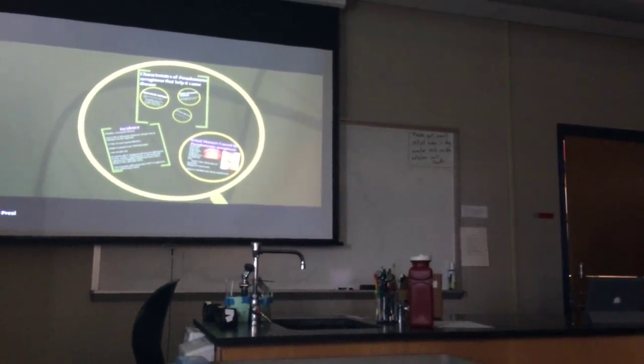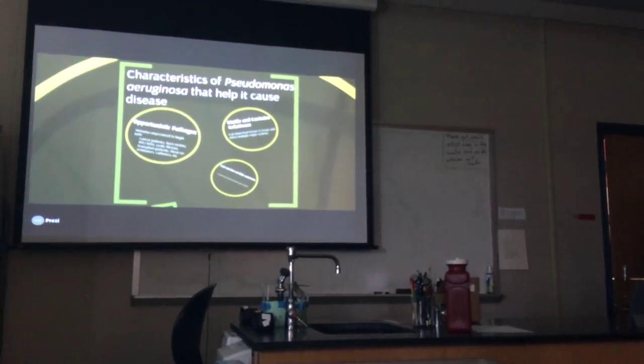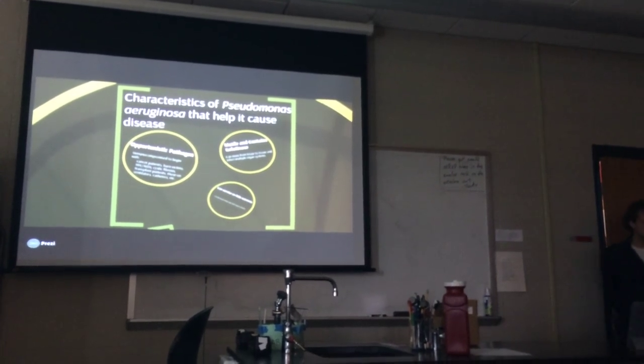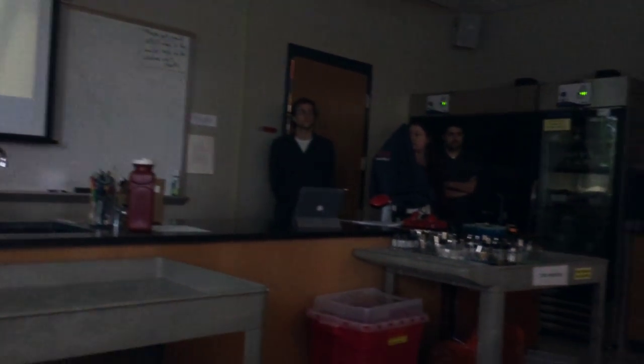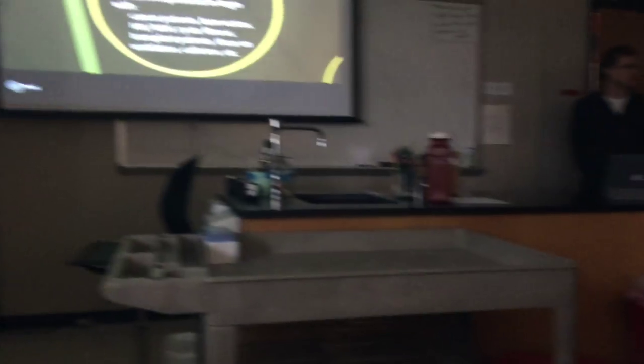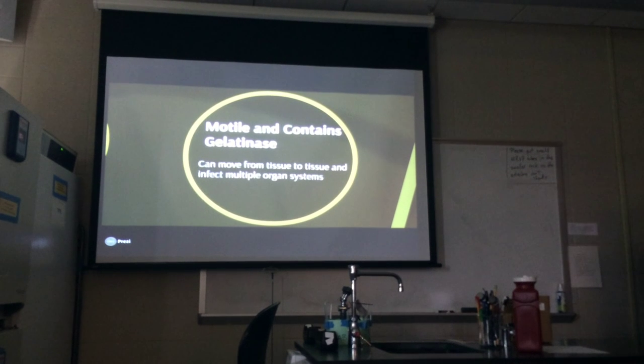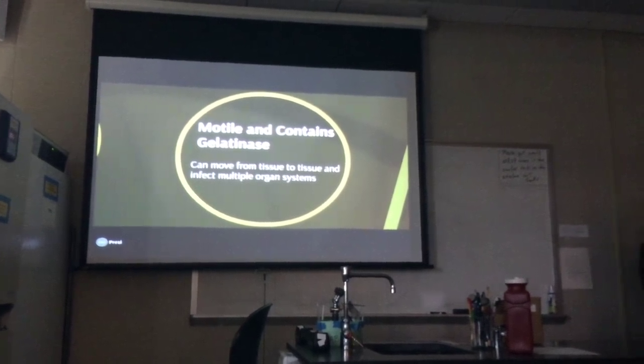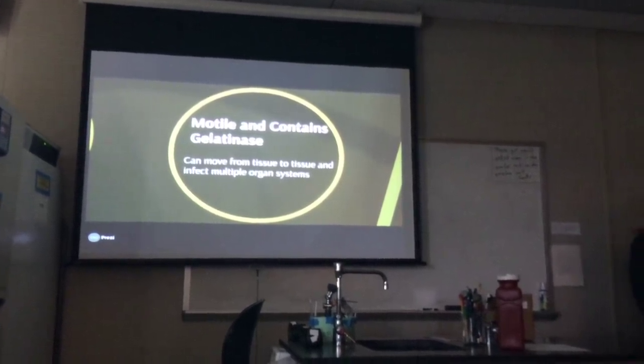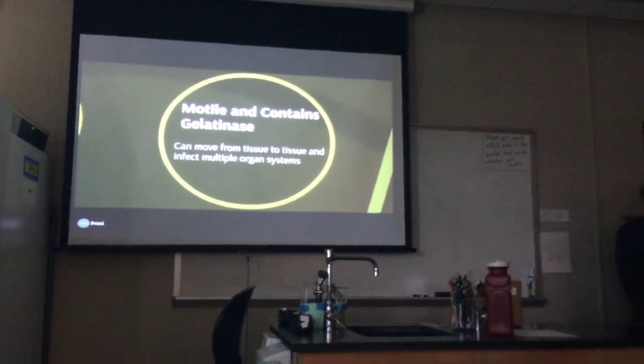Characteristics of Pseudomonas aeruginosa that help it cause disease: it is an opportunistic pathogen, mainly found in immunocompromised patients — cancer, HIV, burn units — as well as patients with devices such as catheters and ventilators. It is motile and contains gelatinase, so it can move from tissue to tissue, infecting multiple organ systems.